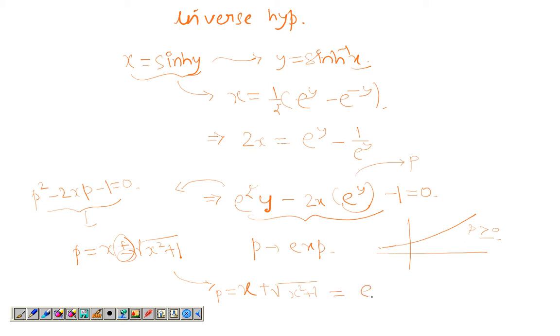And p is nothing but e to the power y. So taking log on both sides, I get y equals log of x plus root, of course natural log there. And this is y. And y is sinh^(-1)(x). So that's how you define the hyperbolic inverse sine x.